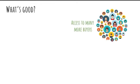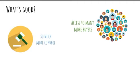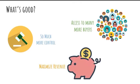SSPs provide publishers with a wide range of potential buyers. Publishers control the platform, so they can set minimum prices on their inventory or choose to sell to specific buyers or through specific channels to maintain quality or for other reasons. All of this allows them to maximize revenue.